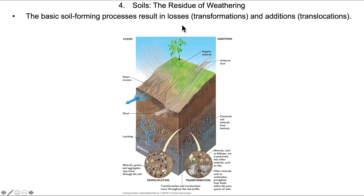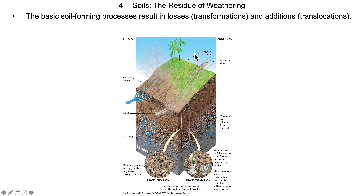Illustrated here are losses and transformations — we're removing material. It can blow away, wash away, or be carried away. We also have additions, also known as translocations: material that can be blown in, provided by plants, or wash in as an addition to the system.